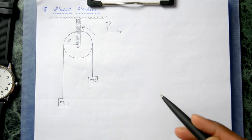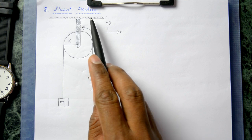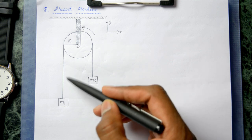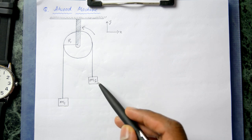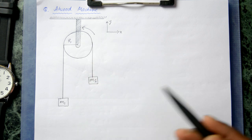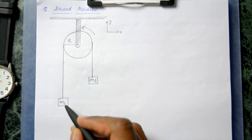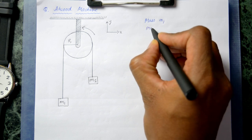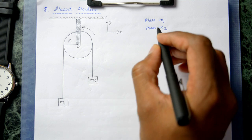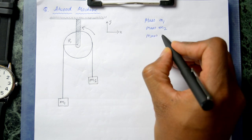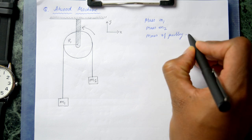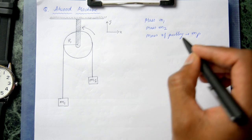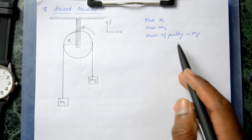Here we have a simple mechanical problem of the Atwood machine. The Atwood machine basically consists of a pulley, and in our problem we have two masses m1 and m2 which are attached to each other by a massless inextensible string. The mass of the pulley is also non-zero and is given as mp. This kind of problem can have two different cases: sometimes the mass of the pulley is zero, sometimes it is non-zero.